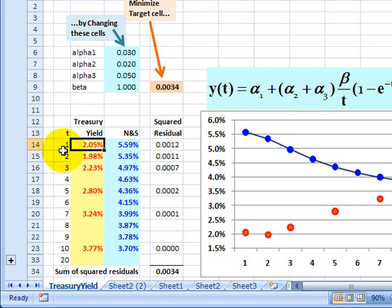So for example, here is the most recent on-the-run yield for a one-year Treasury bill. It's 2.05%. I have a two-year yield, a three-year yield, a five, a seven, and a ten.